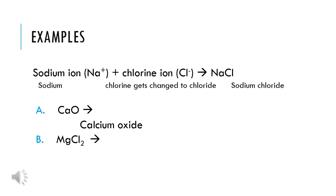Here's MgCl2. Mg stands for magnesium. Magnesium is written first and it's a cation, so the name stays the same — it's still written as magnesium. But chlorine is written second, and it's our anion. Whenever we have the anion, we need to change the ending to -ide. So chlorine becomes chloride. Together, it's magnesium chloride.